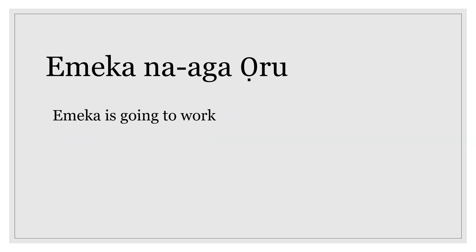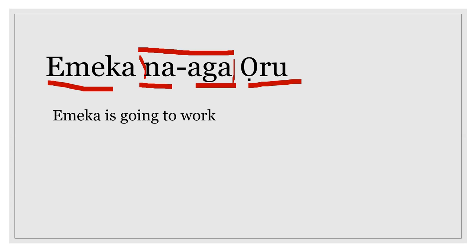Let's see more examples. 'Emeka na aga oru.' Here 'na' is our auxiliary verb, which is helping the sentence describe more what the noun is doing. 'Emeka naga oru' — Emeka is going to work.